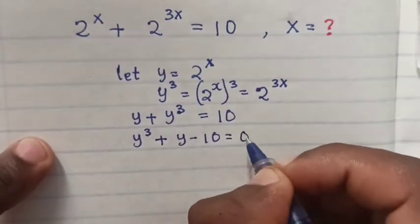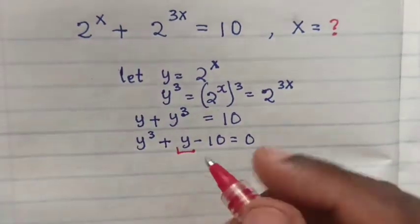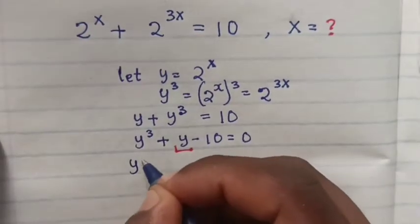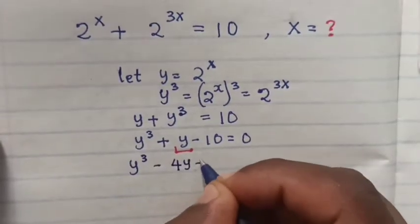Then we bring 10 to the left side. It will be y^3 plus y minus 10 equals 0.